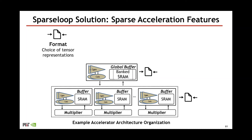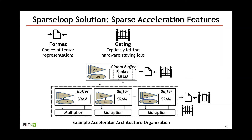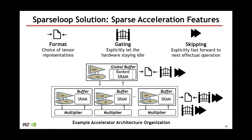The second feature is called gating, which refers to explicitly letting hardware units stay idle whenever ineffectual operations are detected. Gating helps save energy and can be applied to both storage levels and the parallel compute unit. The third feature is called skipping, which is similar to gating in that it eliminates ineffectual operations. However, instead of letting the hardware stay idle, skipping explicitly fast-forwards to the next effectual operation. As a result, skipping can save not only energy but also time. With this classification, we can more systematically describe the sparsity-related optimizations implemented in these architectures.